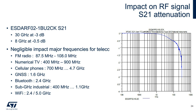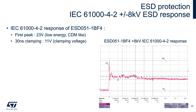Now let's focus on ESD protection quality. The key parameter is ESD response to an electrostatic discharge of 8000 volts. As an example, the ESD 051-1BF temporal response is presented. There are two noticeable values. The first is the peak voltage at the beginning of the response — a low energy peak due to a duration of 10 ns, roughly corresponding to a CDM ESD event. For the ESD 051-1BF4, it is 23 volts. The second is the clamping voltage defined at 13 ns, which is 11 volts for the ESD 051-1BF4. It is much more energetic due to the duration. This temporal response at 8 kV is reported on the data sheet because it corresponds to IEC 61000-4-2 level 4.